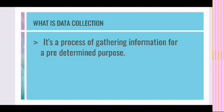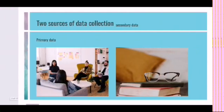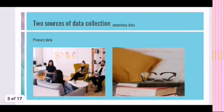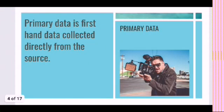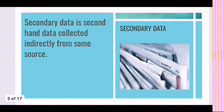Census is conducted after every 10 years. Now coming to two main sources of data collection, in this topic we are going to study about primary and secondary data. Primary data is the first-hand data collected directly from the source, whereas secondary data is second-hand data collected indirectly from some other source.